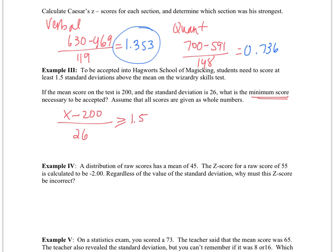Solving this inequality, I cross multiply and add 200. I get that x is greater than or equal to 239. So that represents the minimum score that I must get in order to be accepted into this fantastically awesome School of Magicing.